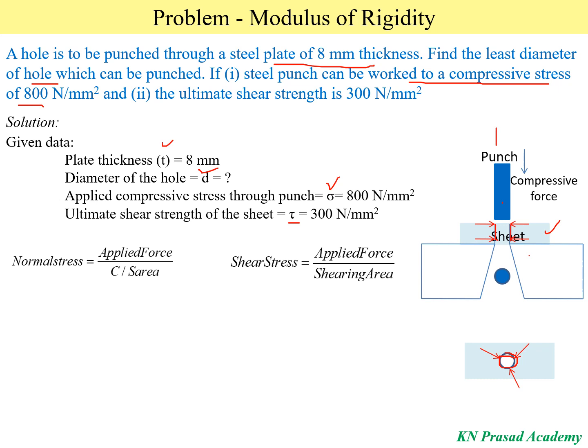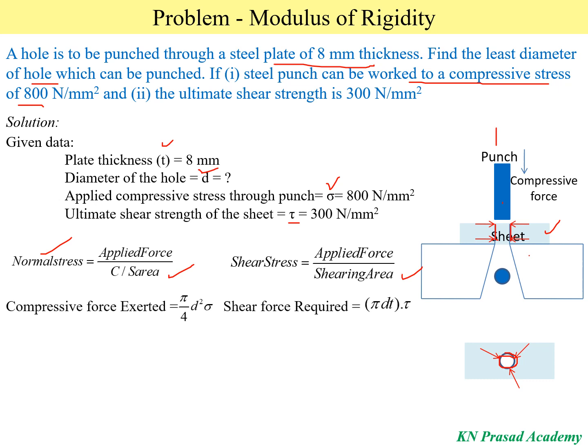The question arises: for compressive stress, what is the cross-sectional area, and for shear stress, what is the shearing area? The compressive force exerted equals the cross-sectional area of the punch — which is (π/4)d² — multiplied by the applied compressive stress σ. So compressive force = (π/4)d² × σ.